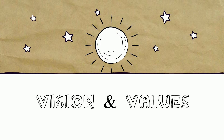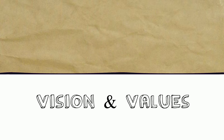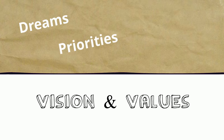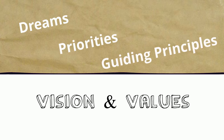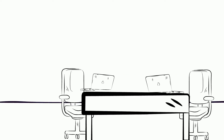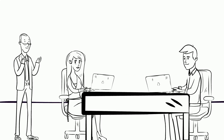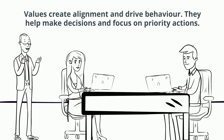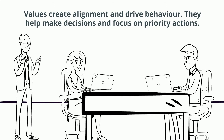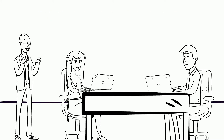Visions and values. A vision depicts what you would like the organization or department to be like in the future. A vision statement is a brief explanation of why the vision is desirable and it should communicate the organization or department's values, dreams and priorities. Values are the guiding principles of the organization. They create alignment and drive behavior, providing the framework to help make decisions and focus on priority actions.